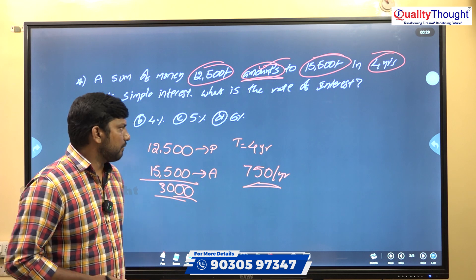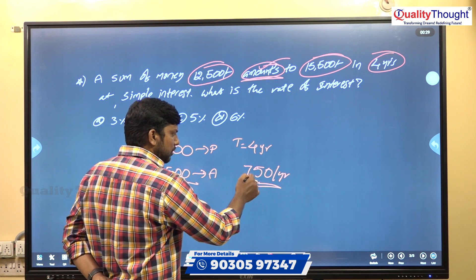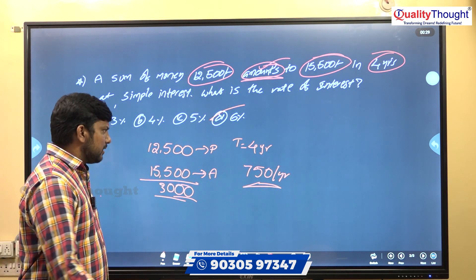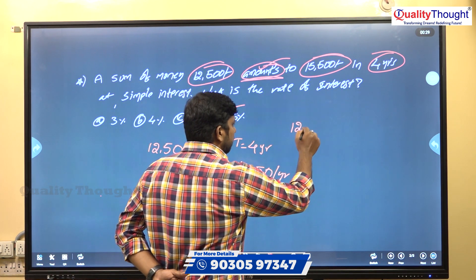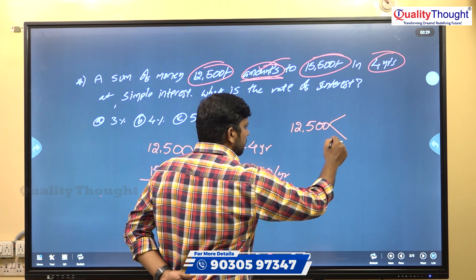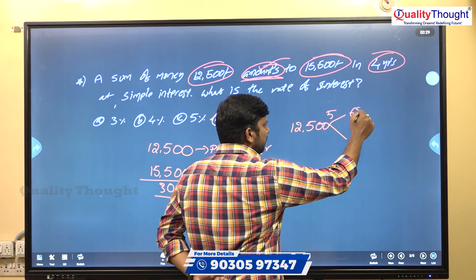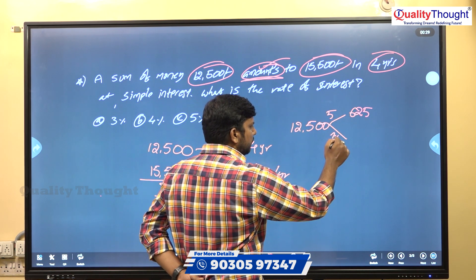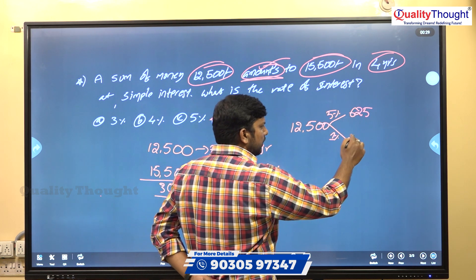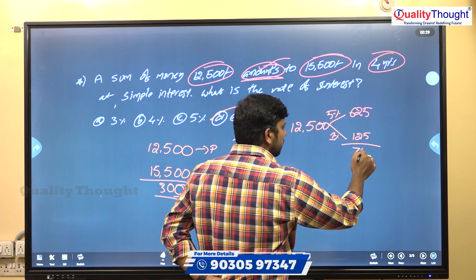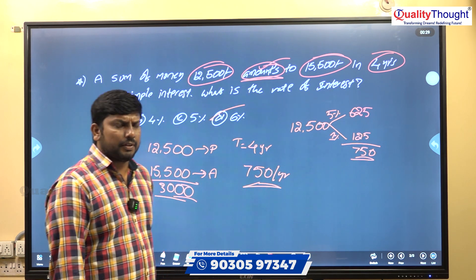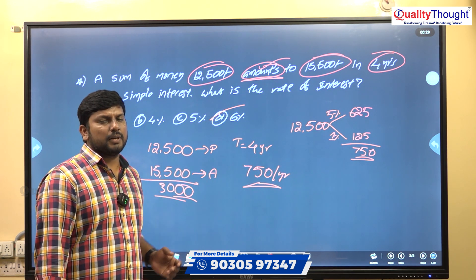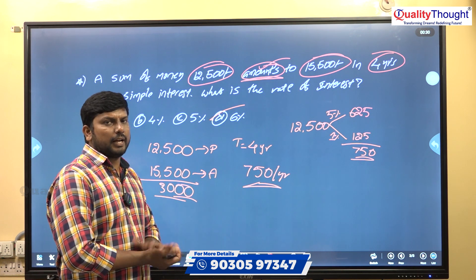5% of 12,500 is 625 rupees. And 1% of 12,500 is 125 rupees. Adding 5% and 1% gives 6%, which equals 750 rupees. So 750 rupees per year corresponds to 6% of 12,500 rupees — that's the rate of interest.